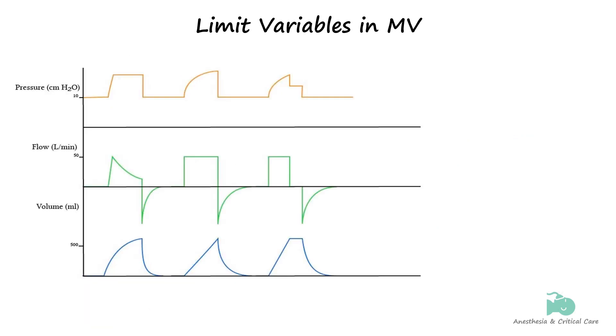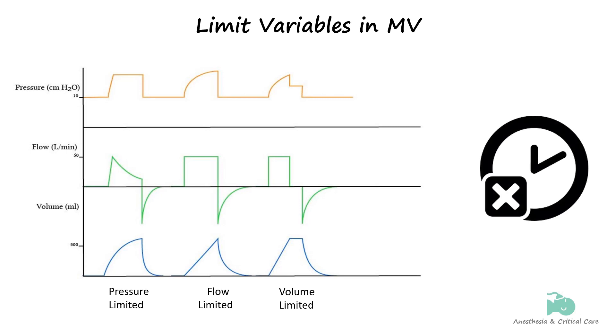The three main limit variables in routine use are pressure, flow, and volume limits. Time, of course, cannot be a limit variable, because with a time-limited breath, the breath would have to end, and that would be cycling.